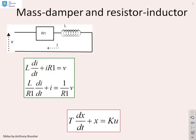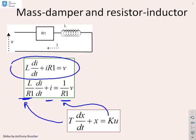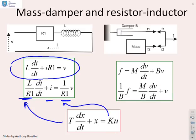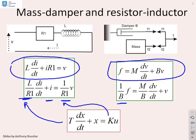Two more examples: the mass-damper and the resistor-inductor. For the resistor-inductor, the model derived earlier was: L·di/dt plus i·R1 equals v. If I divide throughout by R1, I get: L/R1·di/dt plus i equals 1/R1 times v — the coefficient of i on its own is just one, so T equals L/R1 and K equals 1/R1. For the mass-damper, the model was: f equals m·dv/dt plus b·v. Dividing throughout by capital B gives: 1/b times f equals m/b·dv/dt plus v.